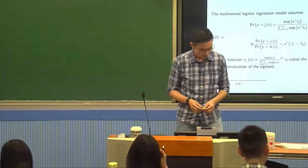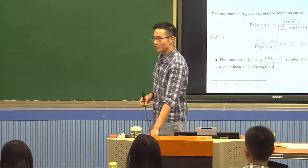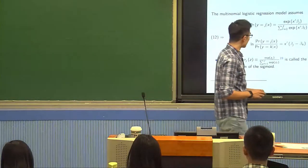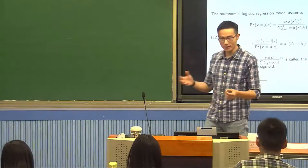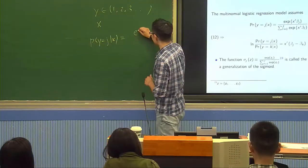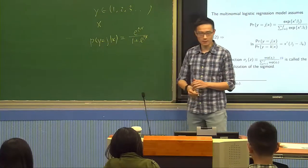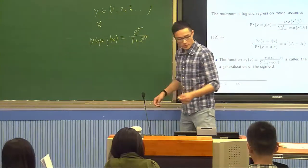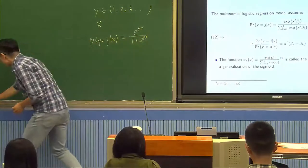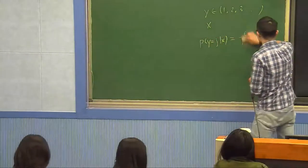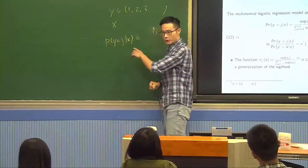Classification and discrete choice models. We'll probably need two more classes to finish this. Let's continue from last time where we left off. We discussed multi-class classification last time. For multi-class, we have e to the beta x over 1 plus e to the beta x — that's the binary case. For a multinomial, we're going to have a different beta j for each j.